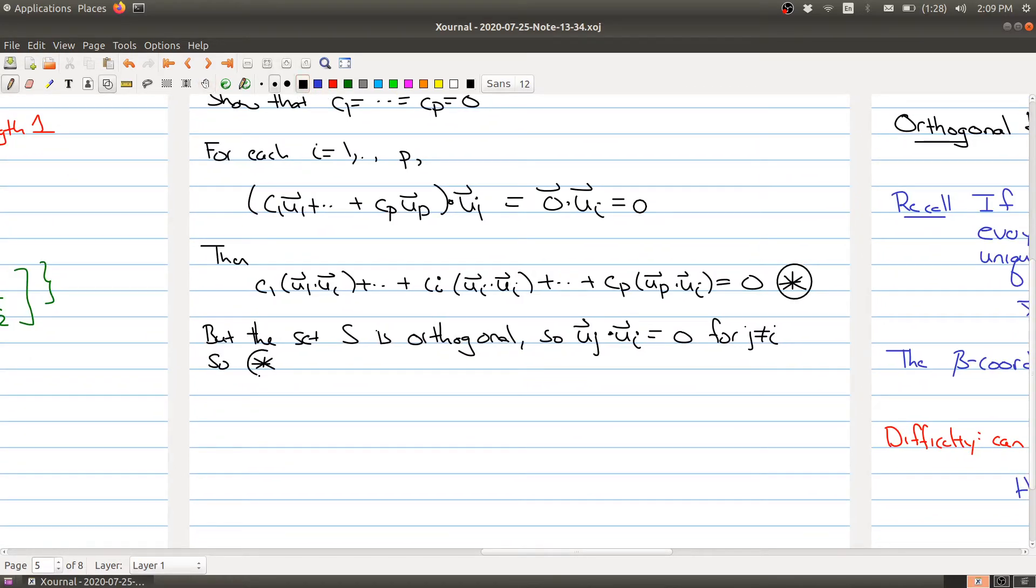So the equation star now becomes zero plus plus all the way to zero, a whole bunch of zeros. Then we have the term involving the dot product of ui with itself, and then a whole bunch of zeros, and that's all equal to zero.